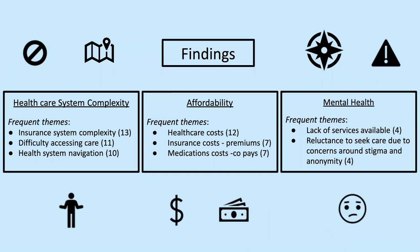Our findings are listed on this slide. The numbers on the slide correspond to the number of times each theme was mentioned. Health care system complexity was a common theme — people mentioned issues accessing health care at times and locations that they needed, and also navigating their insurance protocols.